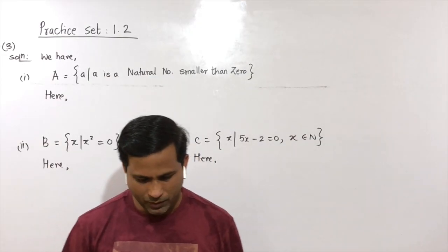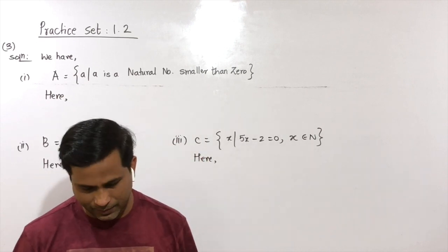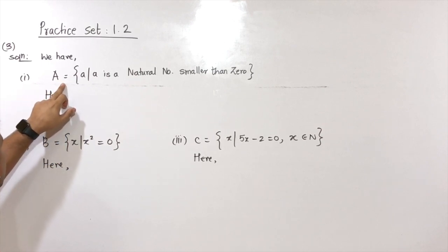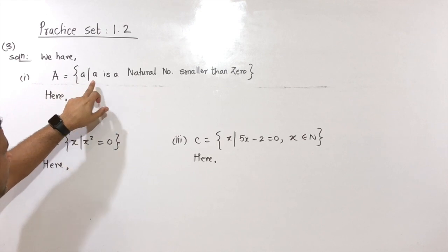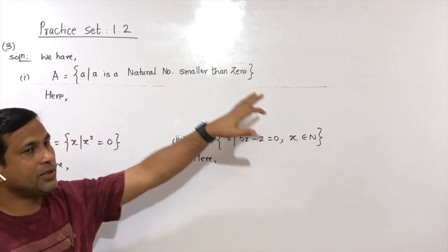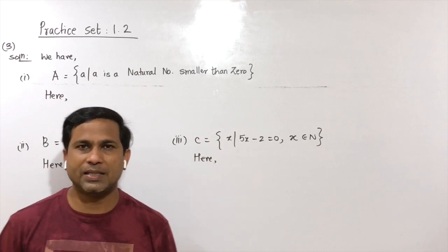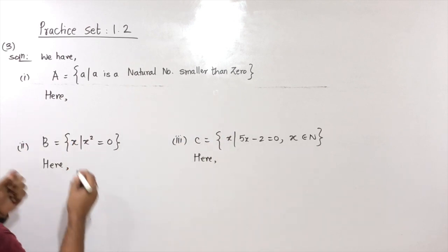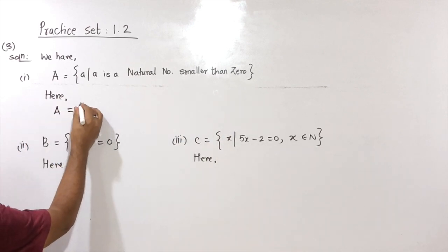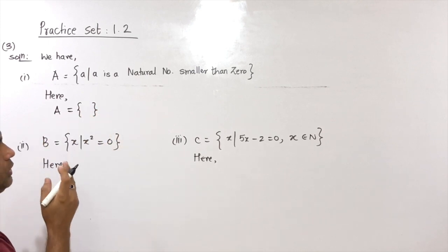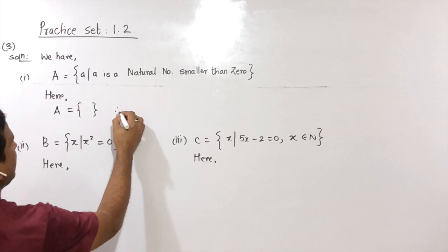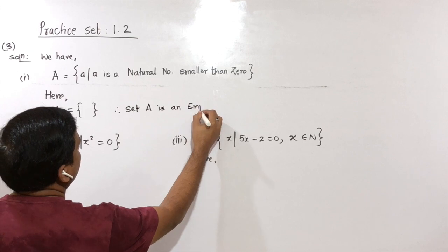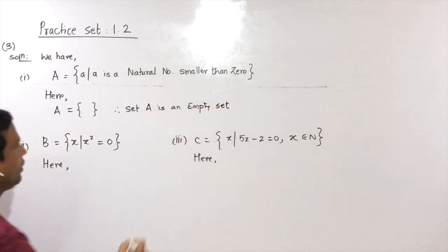Question number 3: which of the following sets are empty sets? First: A = {X such that X is a natural number smaller than 0}. We know natural numbers start from 1, but the condition is smaller than 0 — there is no natural number less than 0. Therefore set A is an empty set.